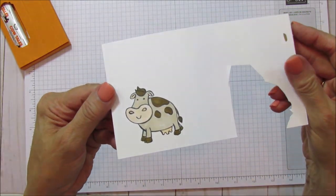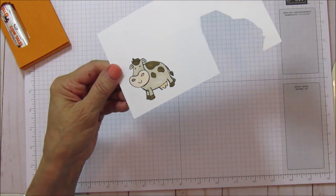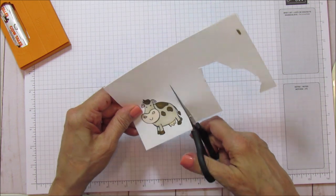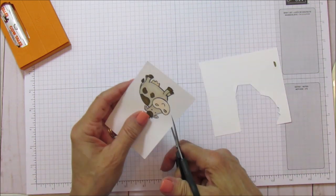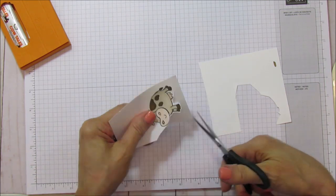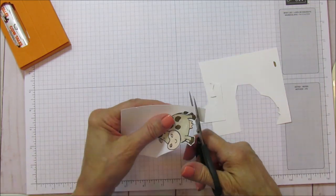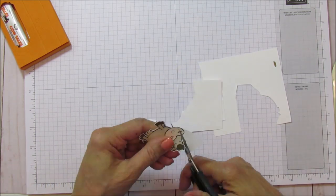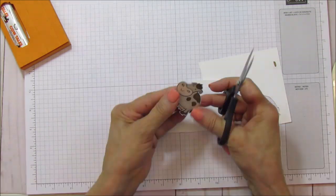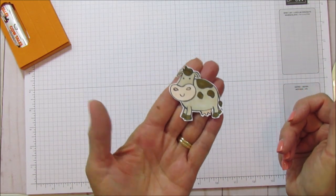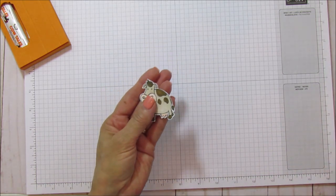Okay, so I have him all colored. I am going to go ahead and speed it up again and I am going to just fussy cut this little guy out. Okay, so you can see the little cow's all cut out. Isn't he adorable? I just love this little cow.